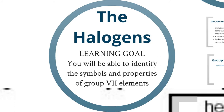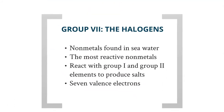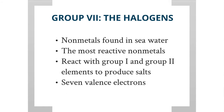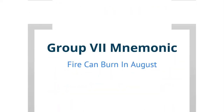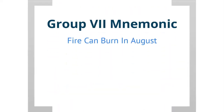You will be able to identify the symbols and properties of group 7 elements. The group 7 elements are the halogens. The halogens are non-metals and they're found in seawater. They are the most reactive of all the non-metals. The halogens react with group 1 and group 2 elements to produce salts. Halogens also have seven valence electrons. The mnemonic for group 7 is: 'fire can burn in August.'